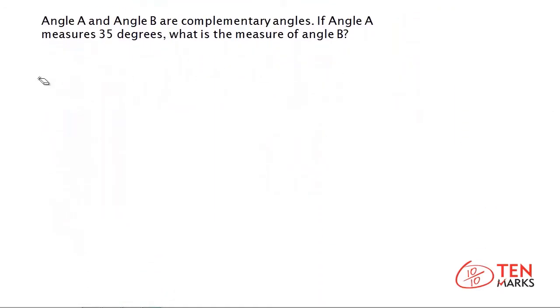Here, you have a second problem. And in this problem, you're told that angle A and angle B are complementary angles. And if angle A measures 35 degrees, what is the measure of angle B? So, you're trying to solve for angle B.